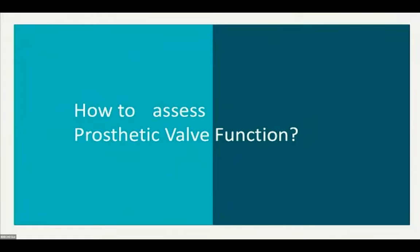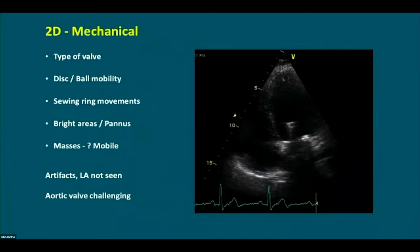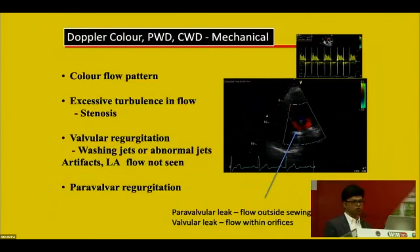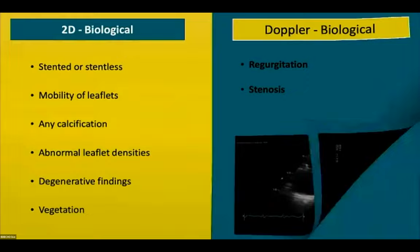Prosthetic valve function is assessed by clinical evaluation — symptoms, date of surgery, valve type and size — and by 2D echocardiography evaluating disc mobility, sewing ring movement, pannus formation, and mobile masses. Color Doppler, continuous wave, and spectral Doppler assess color flow pattern, turbulence, transvalvular regurgitation (washing jet vs. abnormal jet), paravalvular leakage (flow outside sewing ring), and valvular leakage (flow within ring). The same approach applies to biological valves.